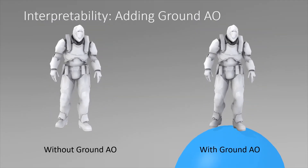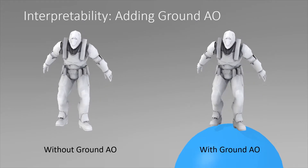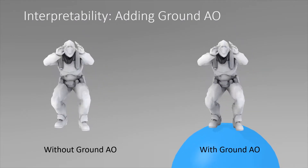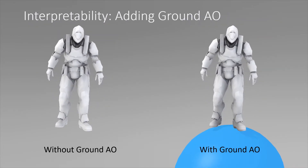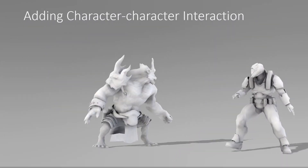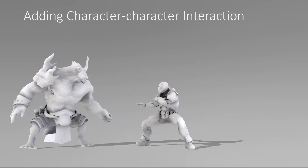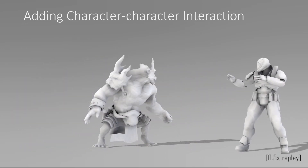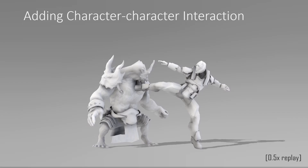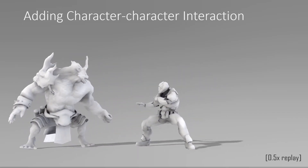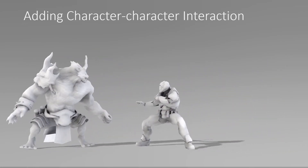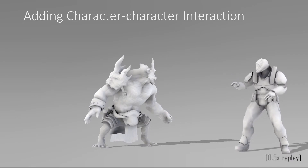Interpretability allows us to cast occlusion onto the character with high quality from any proxysphere. This allows us, for example, to add an occlusion term cast by the ground by attaching a proxysphere that's always below the ground from the point of view of the character. This is another example of interpretability: we only train our model on individual characters with no knowledge of interaction with other characters or objects. By connecting the proxyspheres of one character to the other, we can allow for ambient occlusion interaction. The system is robust enough to handle this interaction in an agreeable way, even though it was not part of the training set.